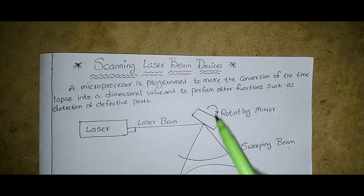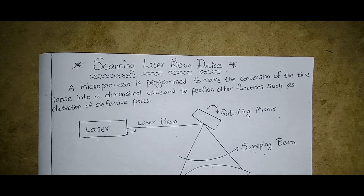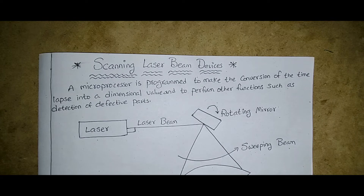Last class we covered the coordinate measuring machine, CMM. CMM falls under the classification of computer aided quality control, and it comes under contact inspection methods. Scanning laser beam devices also come under the classification of contact inspection methods. In your examination, you may be asked to state and explain the different devices or classifications under contact inspection methods.